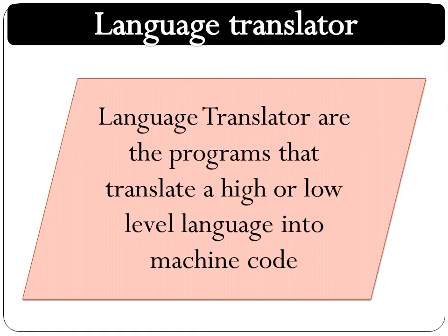The program written in any language is first converted into machine language because the computer can understand only machine language. Any program entered into the computer is first translated into machine code. Machine code means the program in the form of 0 and 1. Any program entered into the computer is first converted into the form of 0s and 1s, and this form is called machine code.